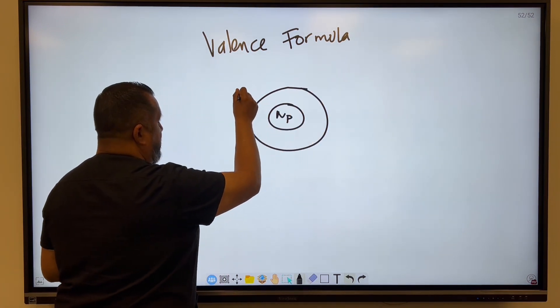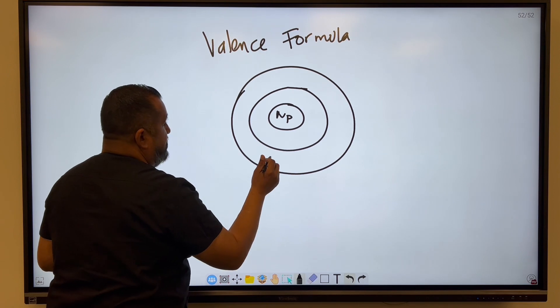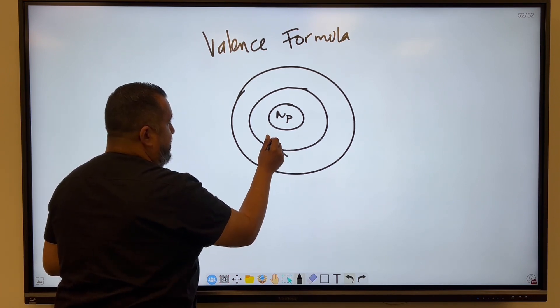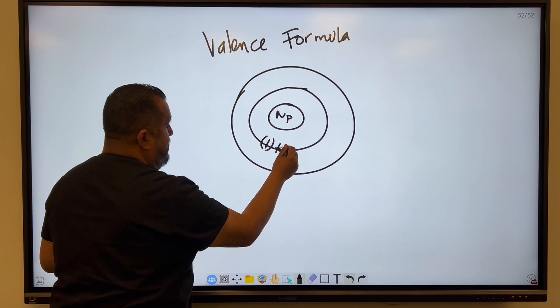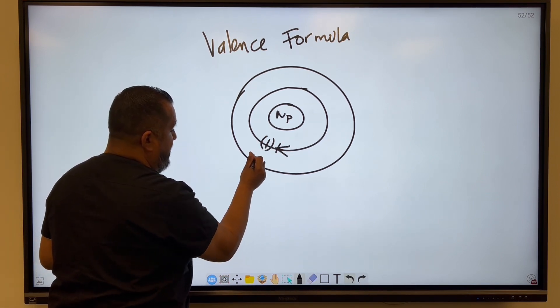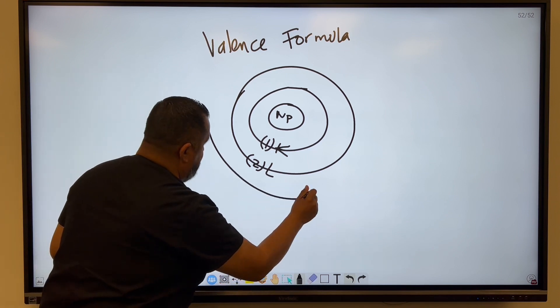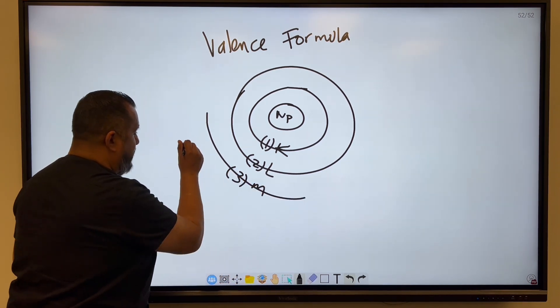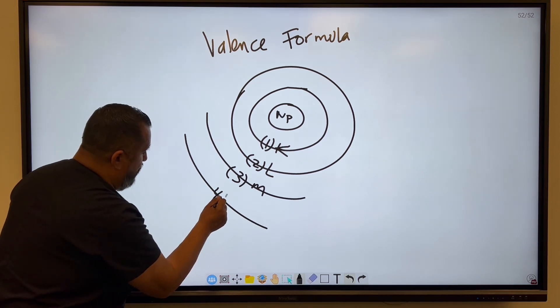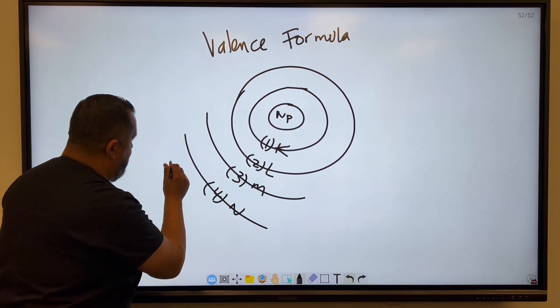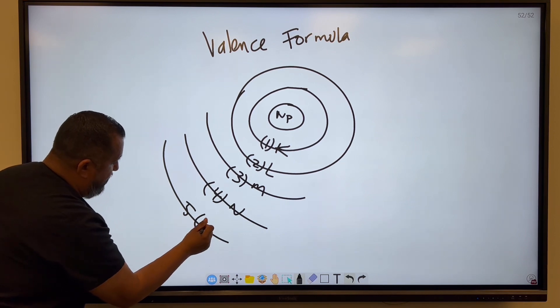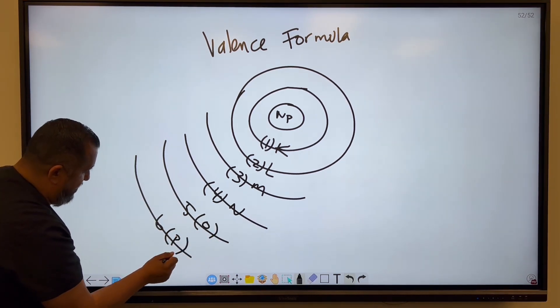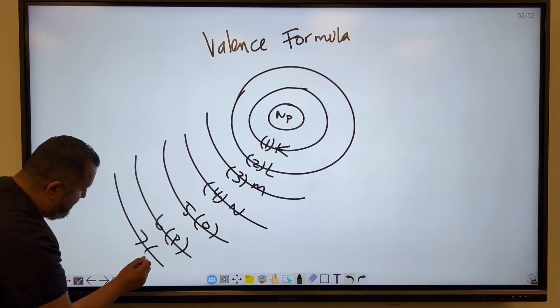There's going to be another energy level here. This one is going to be the first energy level, and this is the K shell. Then we have the second one, the second energy level, that's the L. We have a third one, that's going to be M. Then we have a fourth one, that's going to be N. Over here, we have a fifth one, that's going to be O. We have a sixth one, that's going to be P. And then we have a seventh one, that's going to be Q.